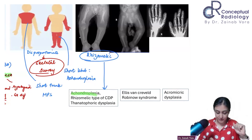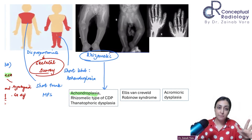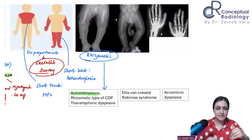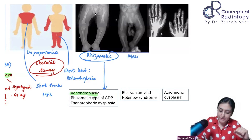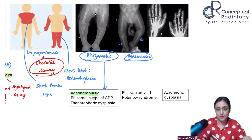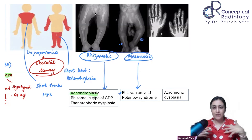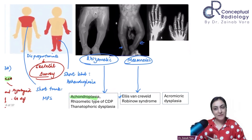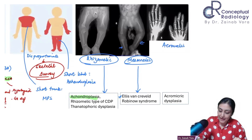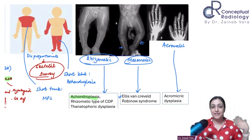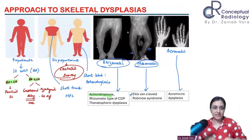Mesomelic shortening means the distal segment is shorter. Two rare examples are Ellis-van Creveld syndrome — which also features a narrow thorax and possible heart disorders — and Robinow syndrome. Acromelic shortening involves the hands, as seen in acromicric dysplasia, which is very rare. This is the systematic approach to short stature evaluation.